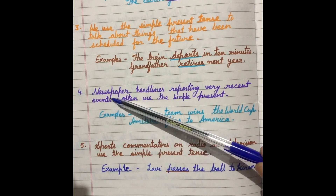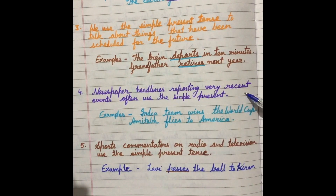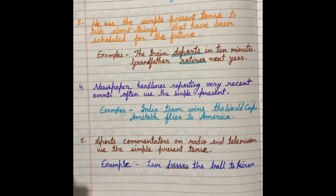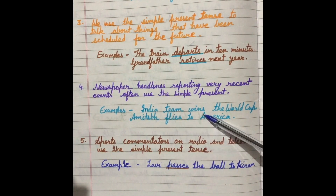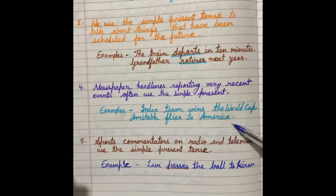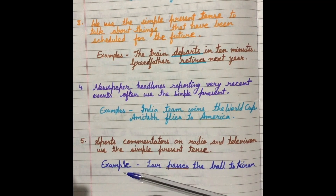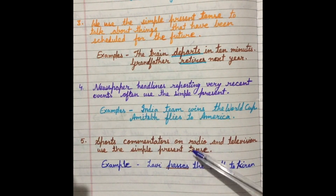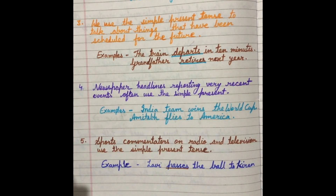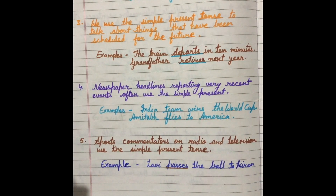Next use: newspaper headlines reporting very recent events often use the simple present. जो newspaper की headlines होती हैं, जो recently happen हुआ है, उनके बारे में simple present tense use किया जाता है. Like: India team wins the world cup; Amitabh flies to America. Also, sports commentators on radio and television use the simple present tense. For example: Lovie passes the ball to Kiran.